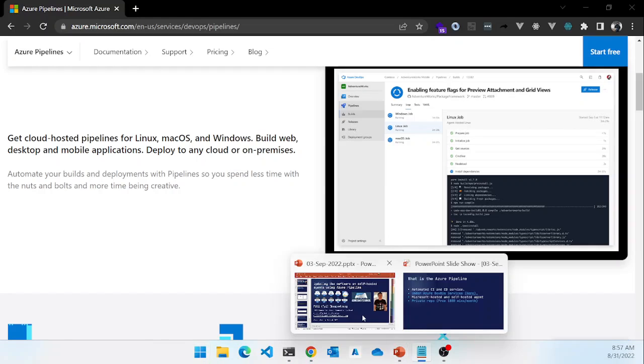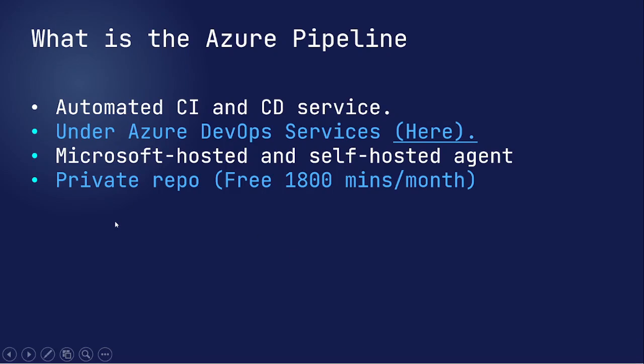For Microsoft Hosted, they provide a free limit of 1,800 minutes per month for private-level projects. That means you can use the pipeline for building for free within 1,800 minutes for private level. For public level, you can use it for free forever.